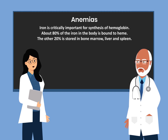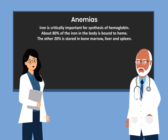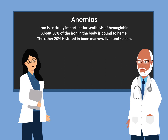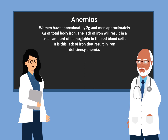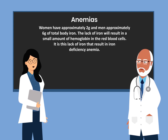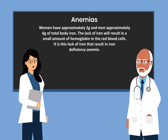Iron is critically important for synthesis of hemoglobin. About 80% of the iron in the body is bound to heme. The other 20% is stored in bone marrow, liver, and spleen. Women have approximately 2 grams and men approximately 6 grams of total body iron. The lack of iron will result in a small amount of hemoglobin in the red blood cells, and it is this lack of iron that results in iron deficiency anemia.